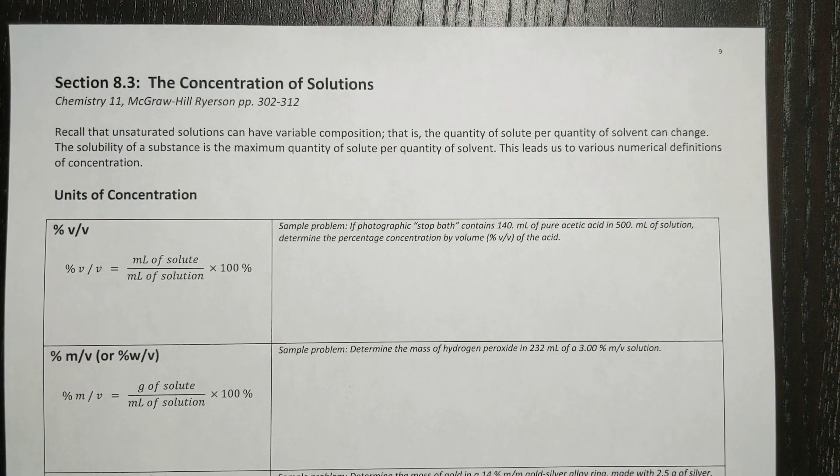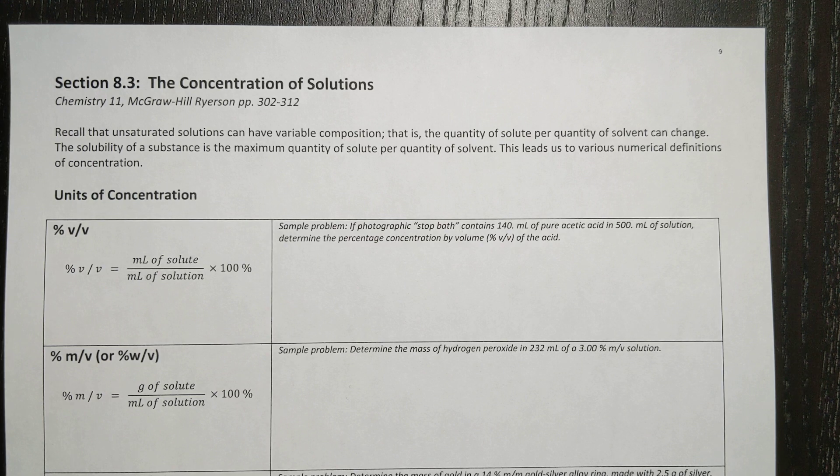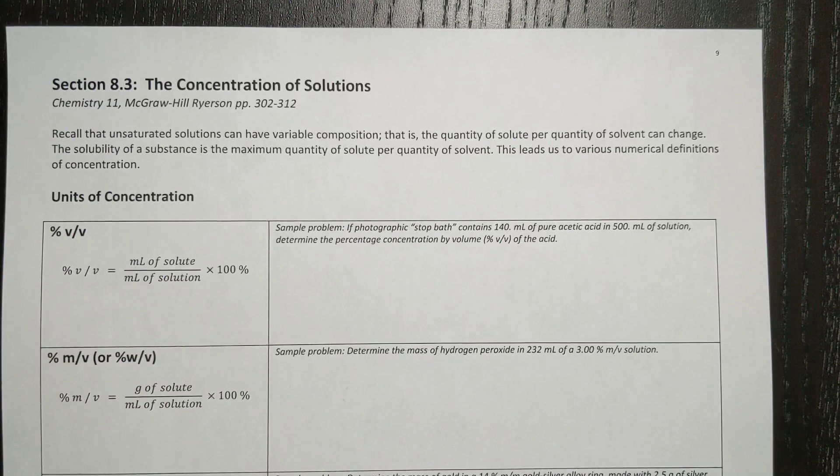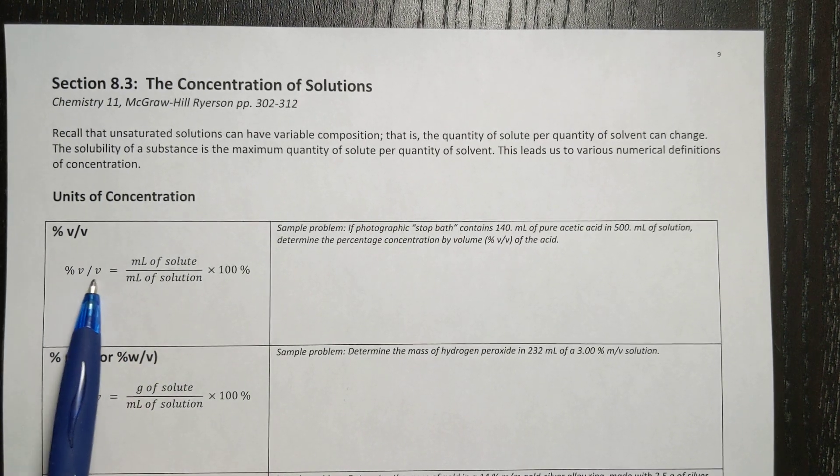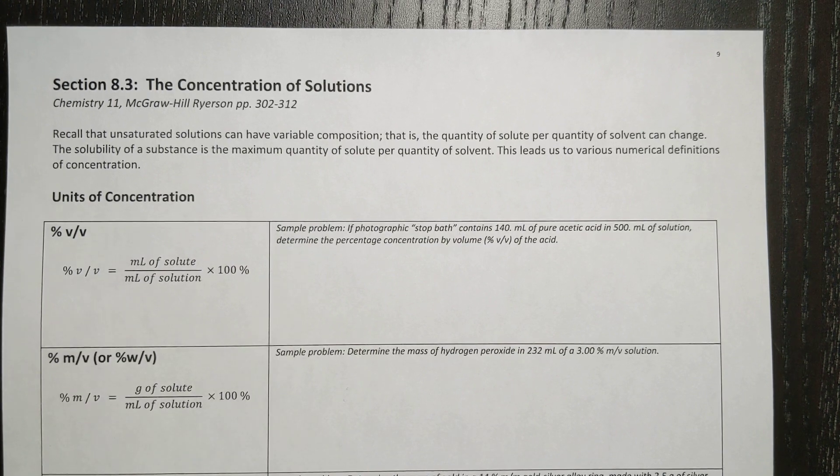So what we're going to do is we're going to do a number of calculations here on different types of concentrations. So the first thing that we are going to look at is percent volume, which is milliliters of solute per milliliters of solution. So that's how you do a percent volume. Let's take a look at the sample problem here.